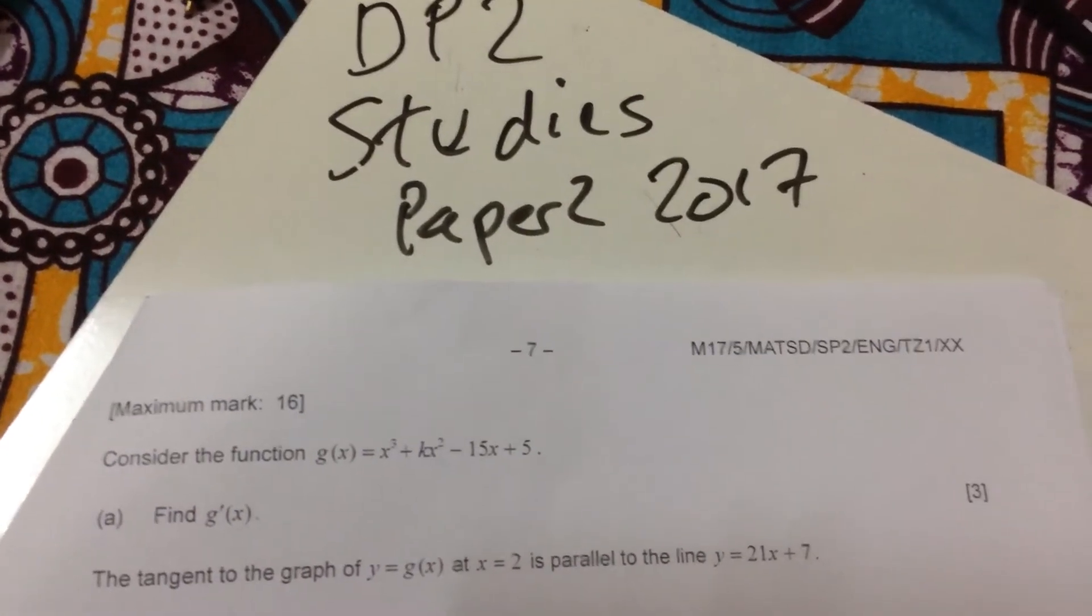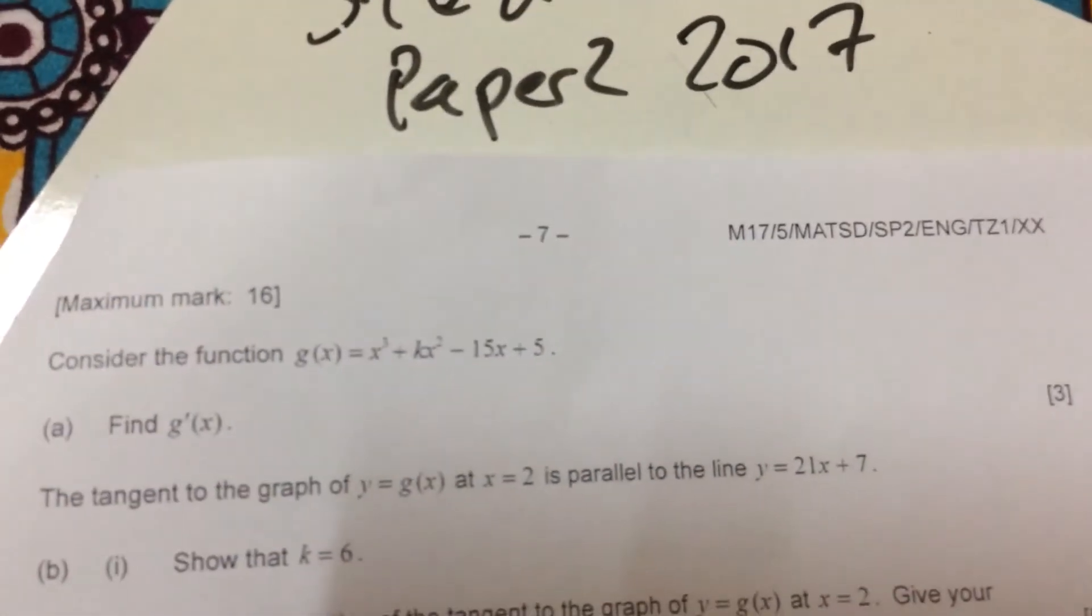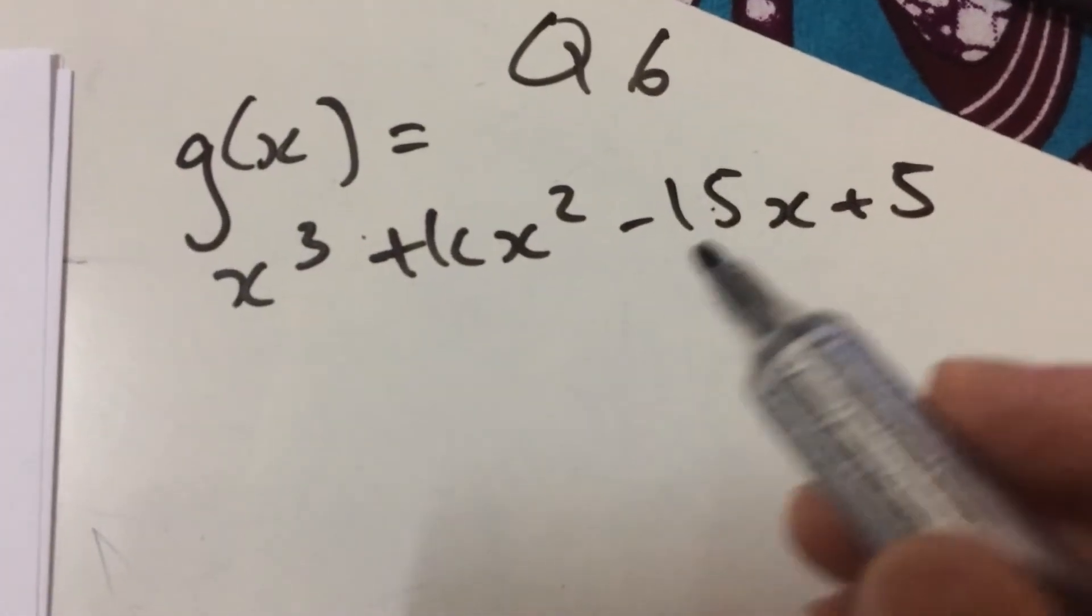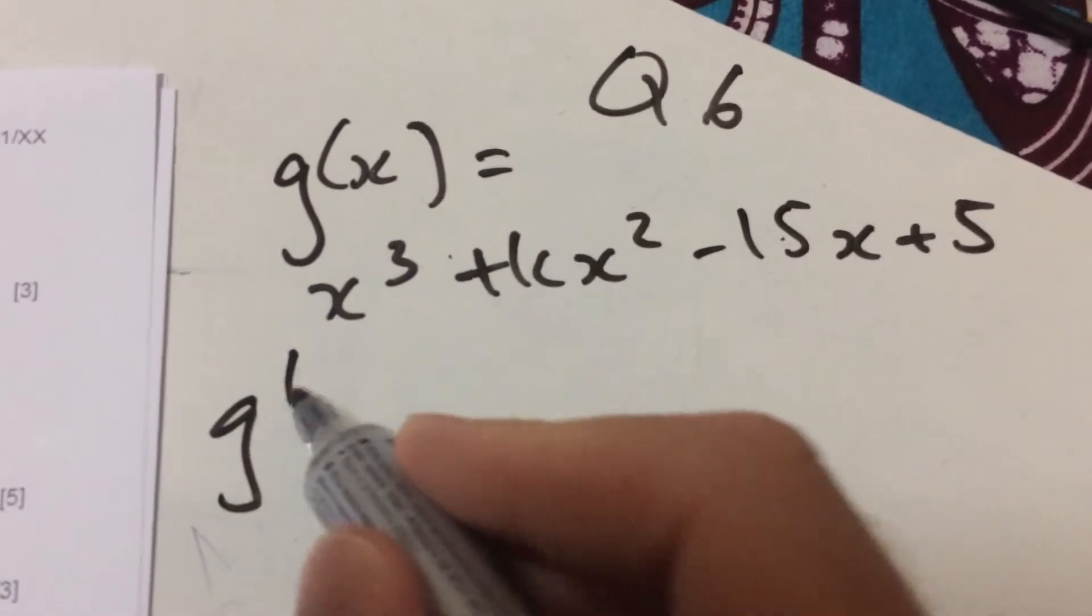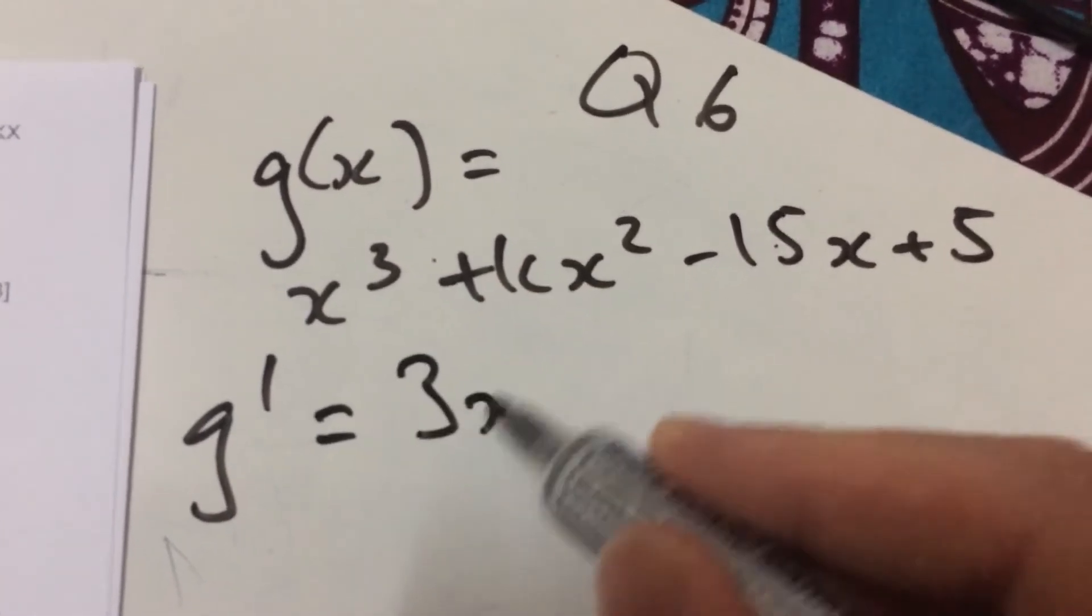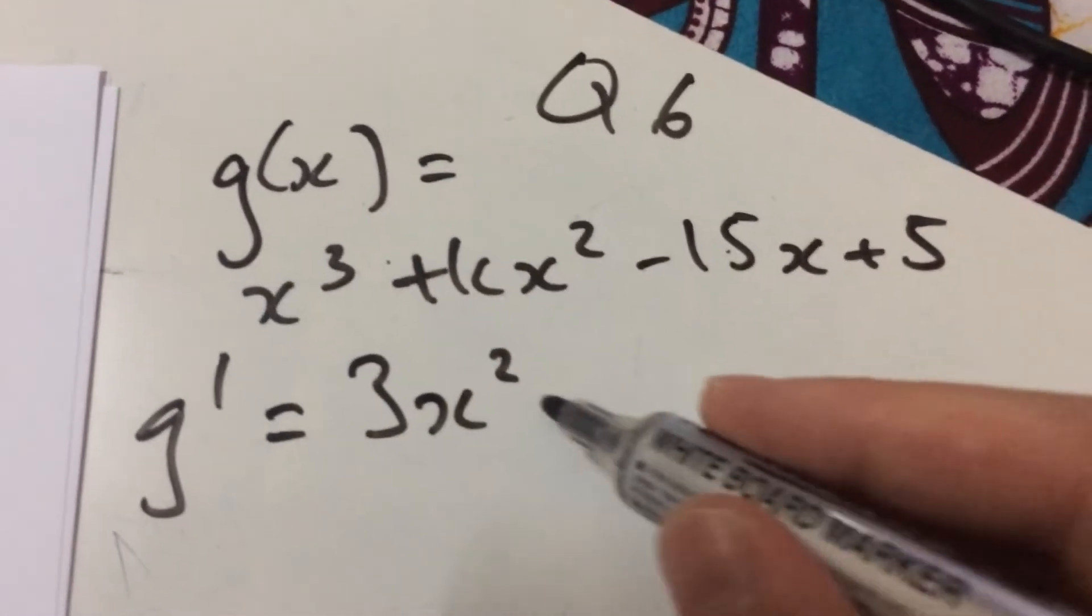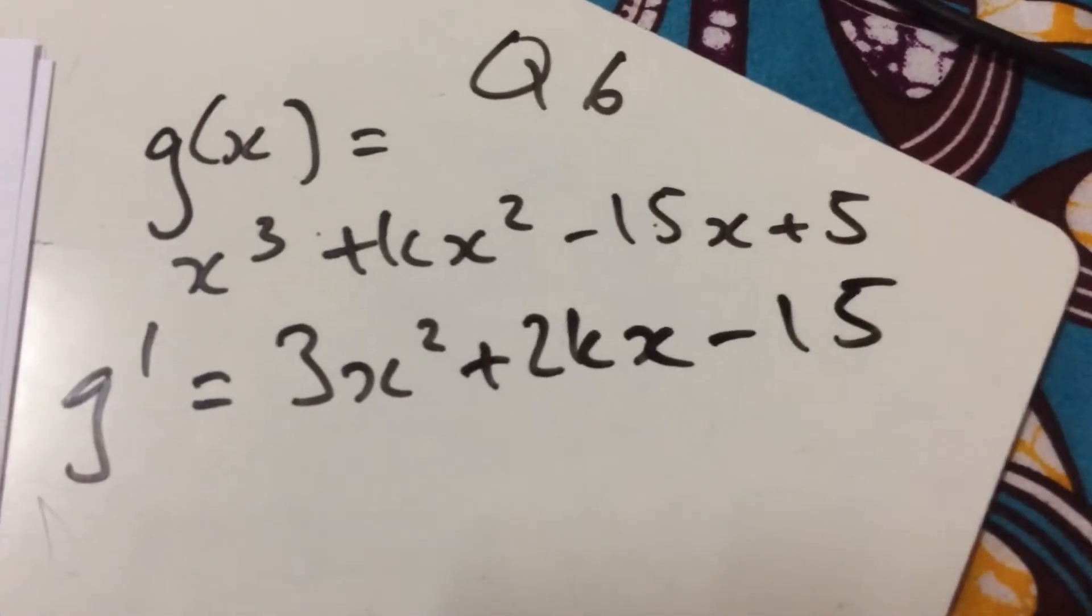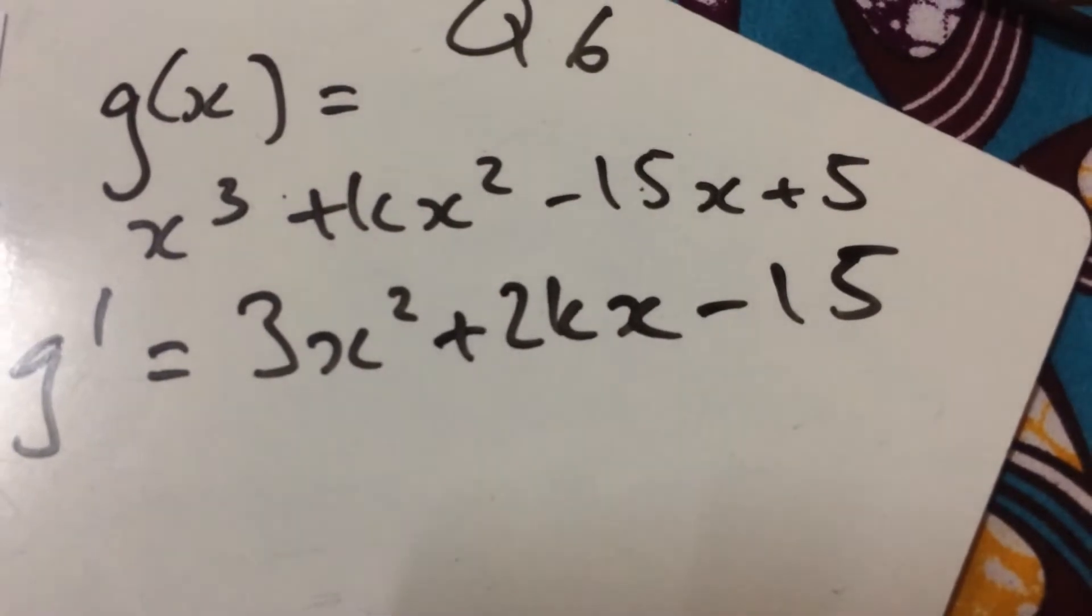This is question 6 we're looking at, and it's got a function here, g(x) = x³ + kx² - 15x + 5, and the first thing we have to do is find g'(x), so the first derivative. So we bring down those powers, take away 1, there's a k there, but that can still be included, minus 15. So there we go, that's 3x² + 2kx - 15.